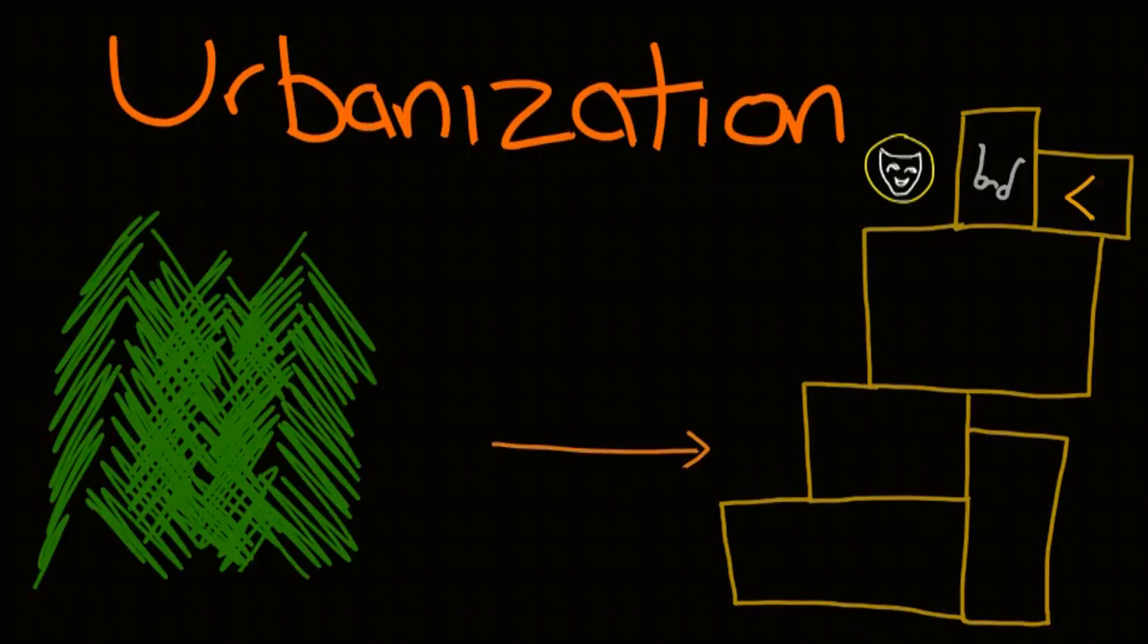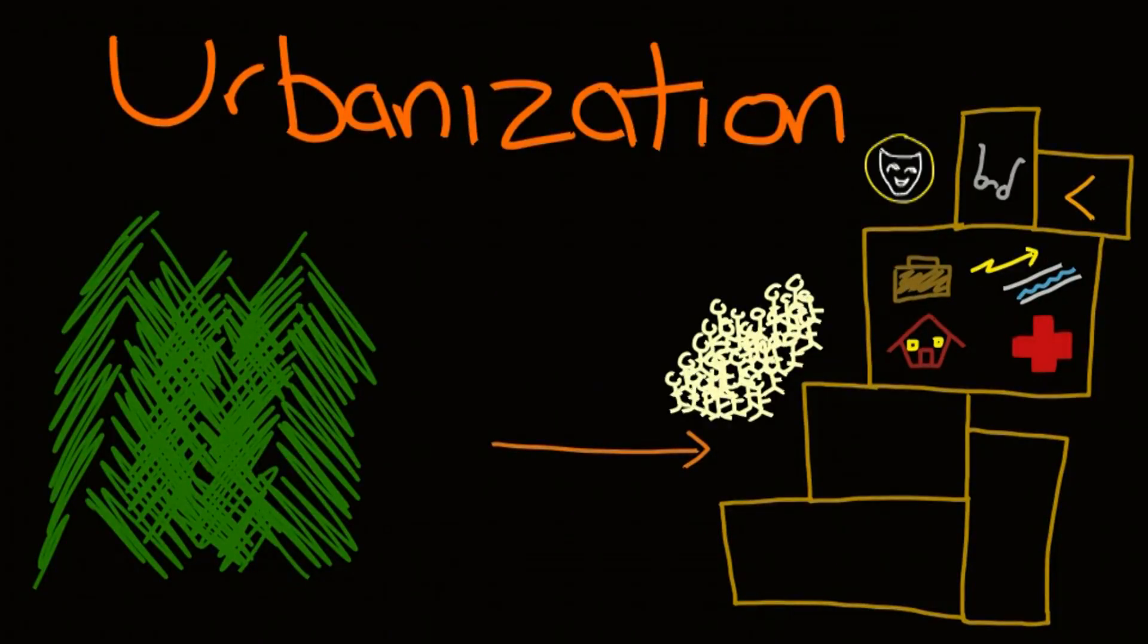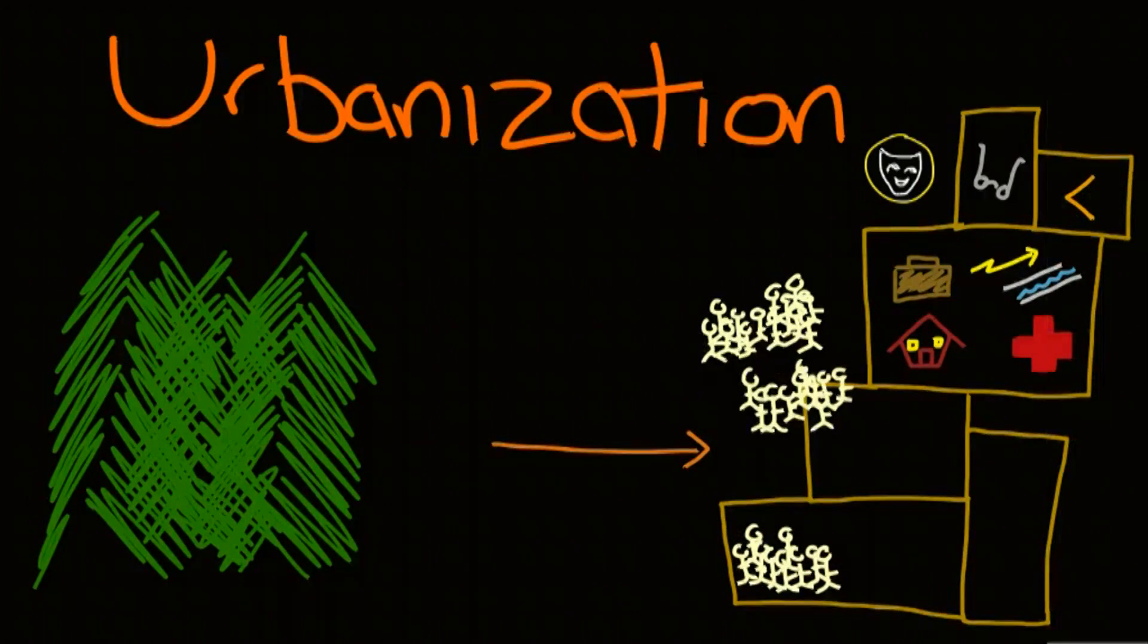People move to urban areas for a number of reasons: jobs, better utilities, easier access to hospitals and schools. As more and more people move to cities and metropolises, it really begins to affect the people who live there. In order to make friends and form connections, people must seek out small communities to join.